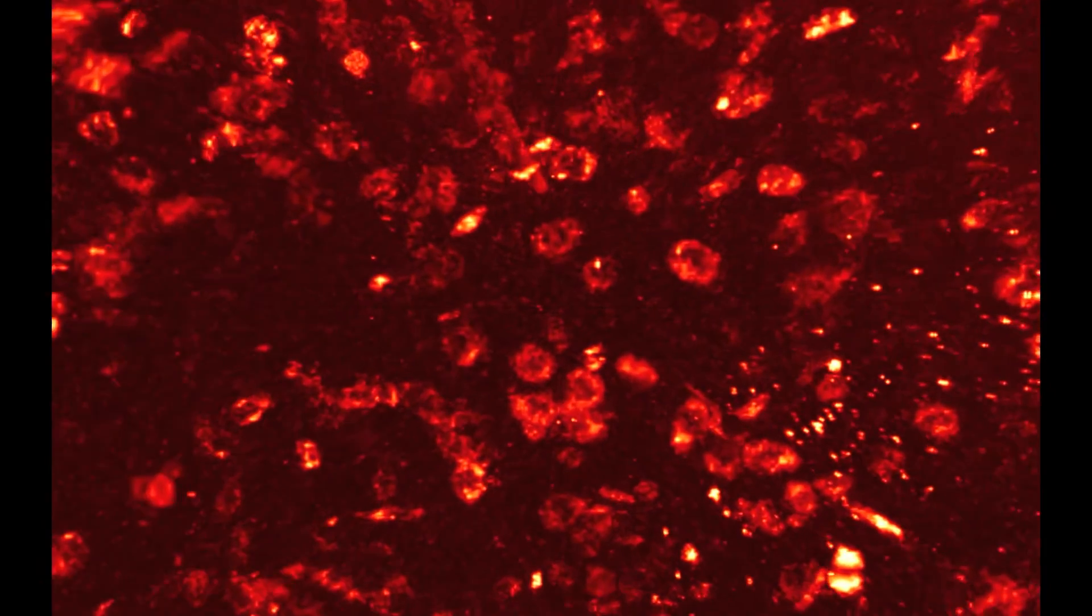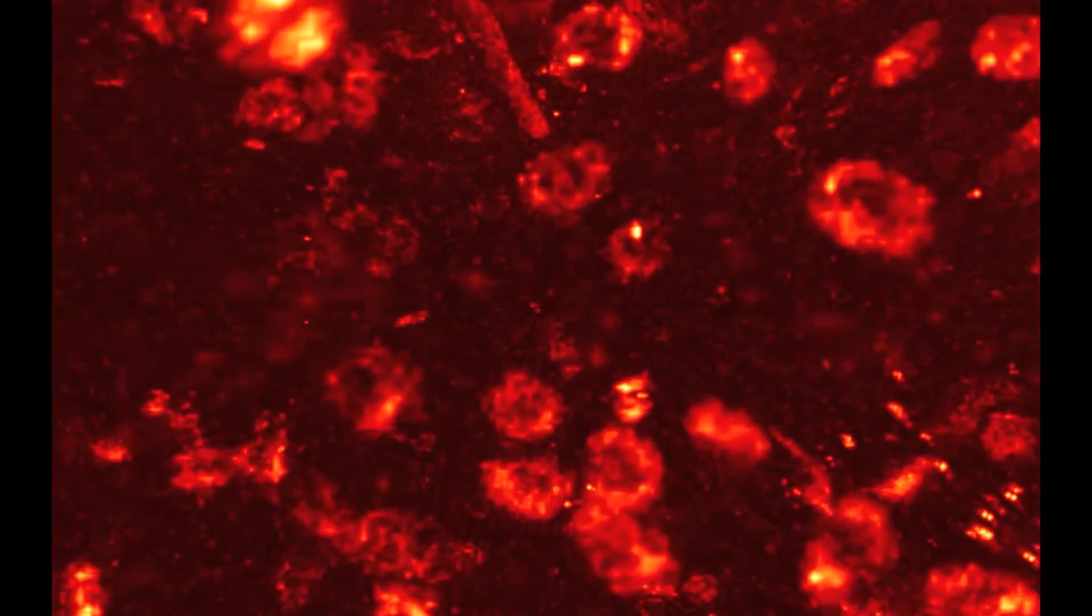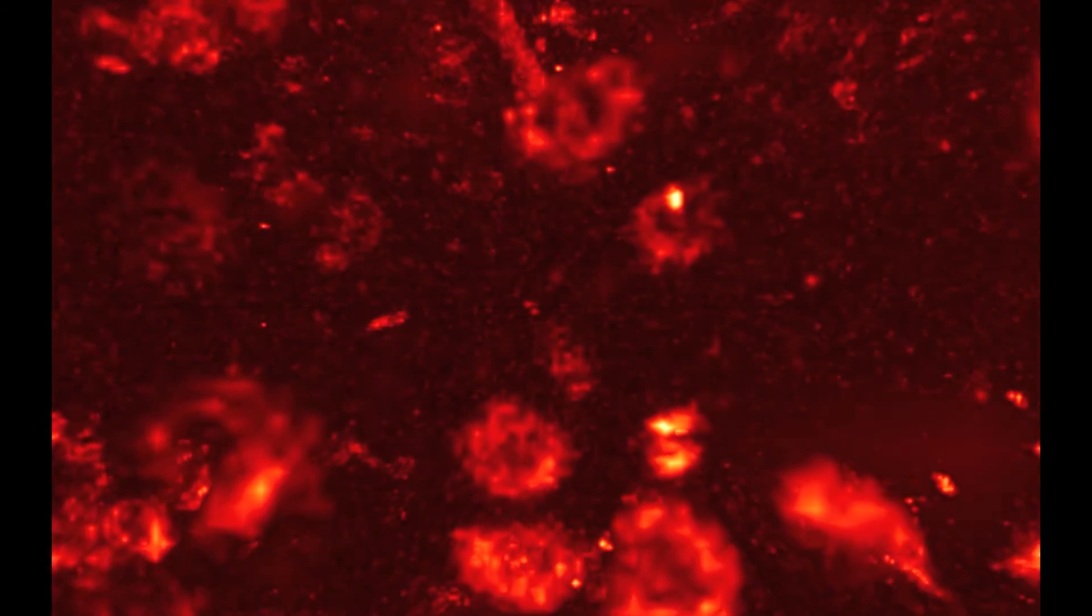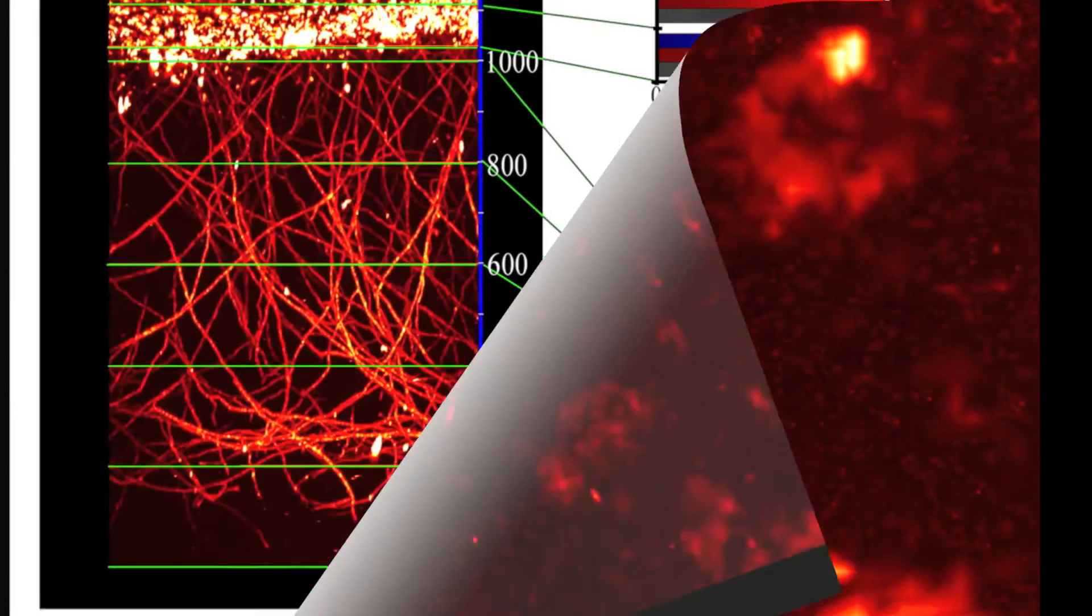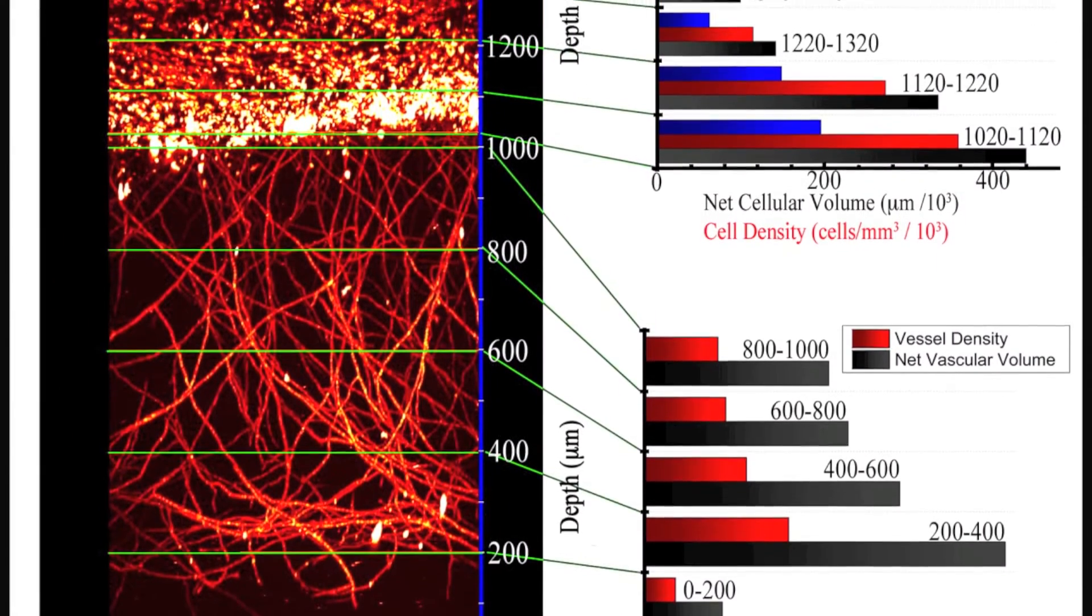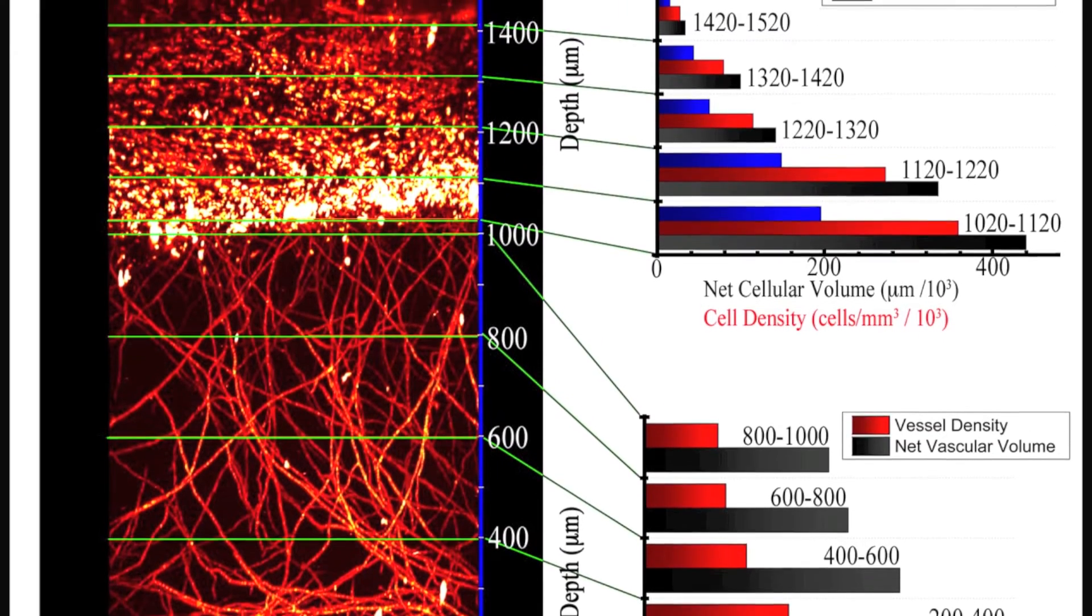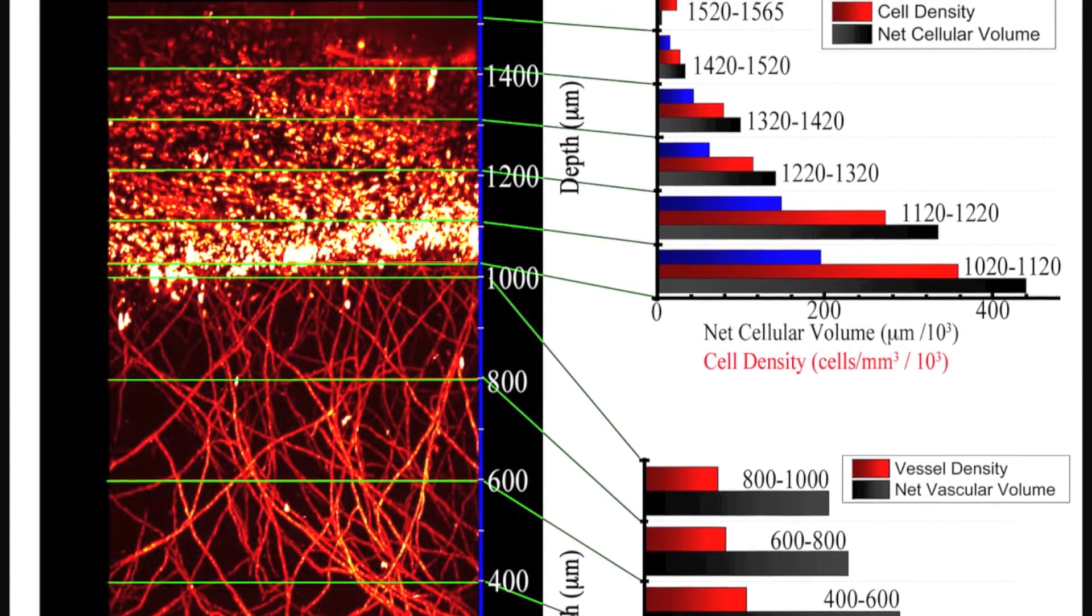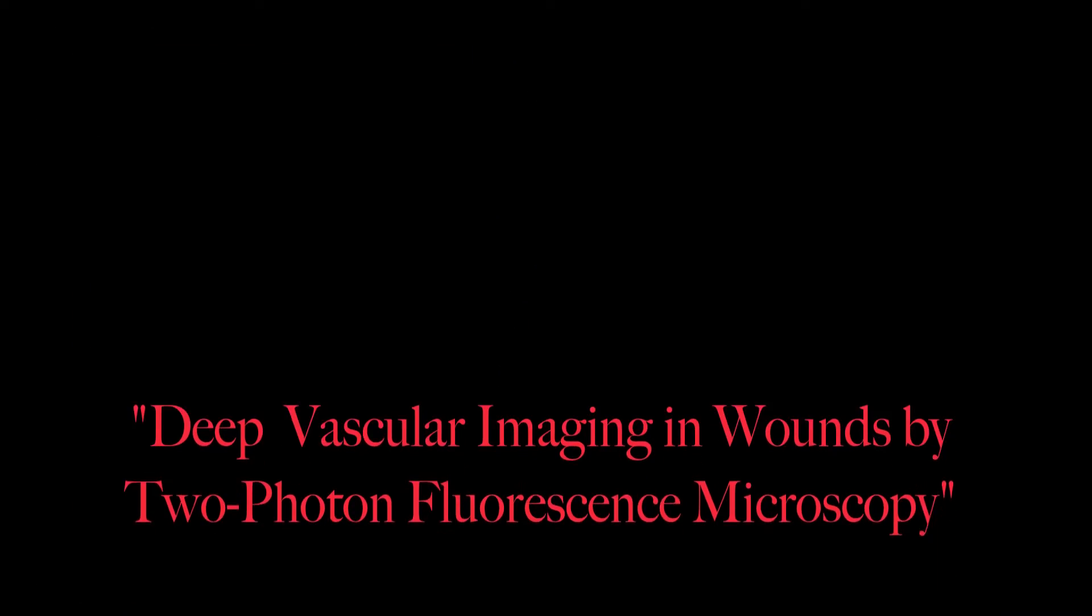Thus, the RGD probe targeted 2-photon fluorescence microscopy imaging overcomes the problem associated with histological preparation of wound sections. This technique offers a novel method for cell tracking and monitoring of angiogenesis during the proliferative phase of wound healing, and offers an important stepping stone towards in vivo 2-photon fluorescence microscopy imaging of the wound healing process.